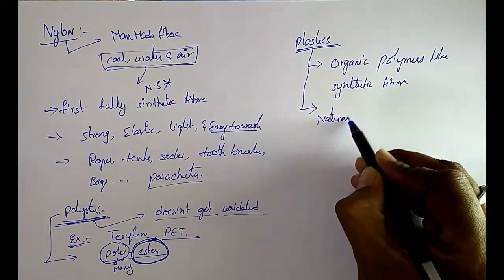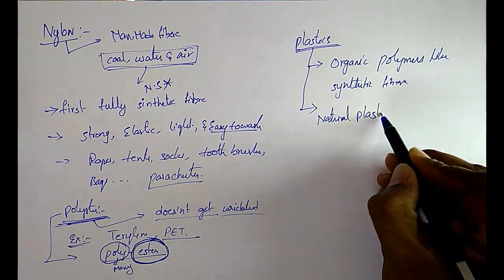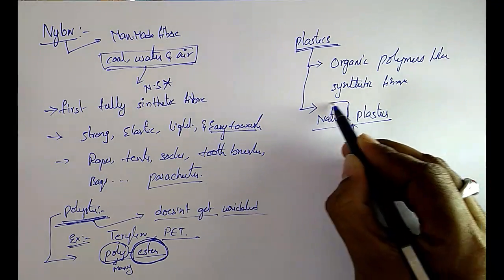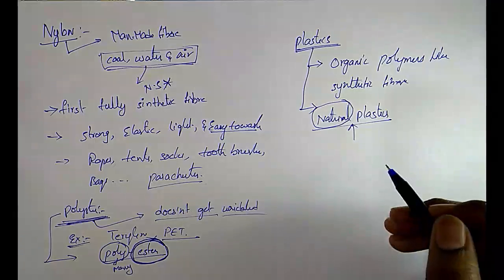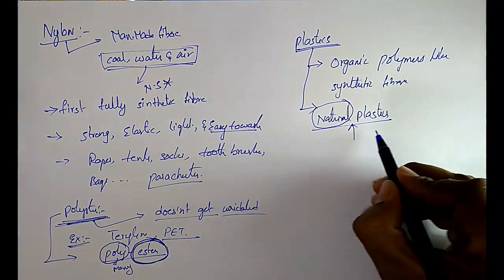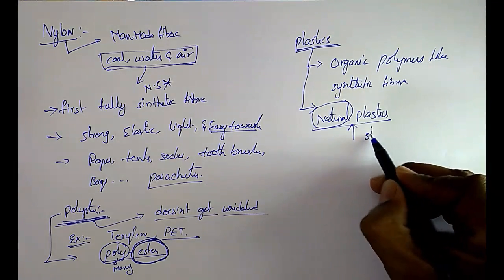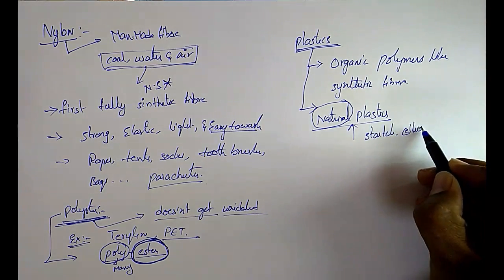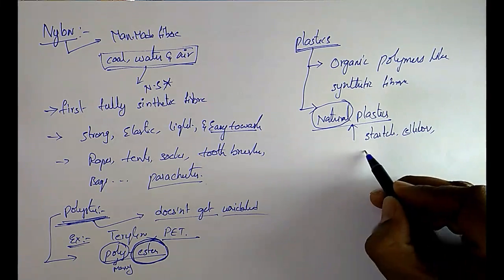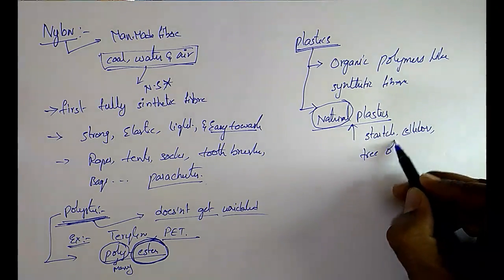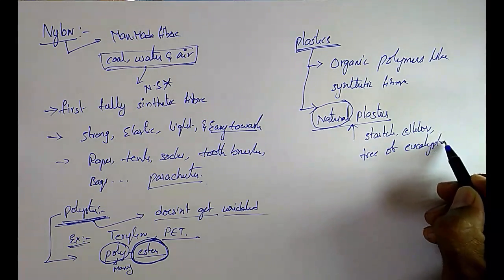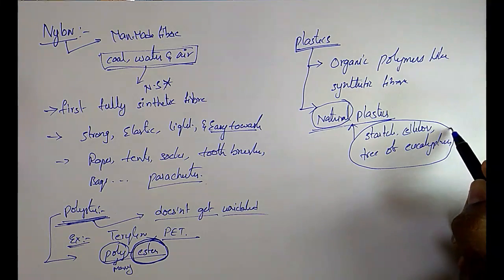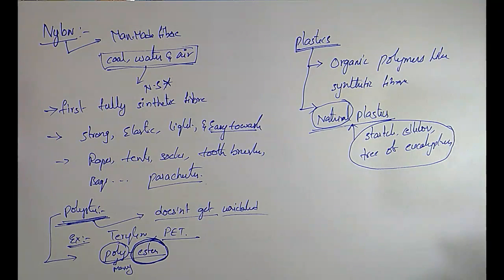First, natural plastics — as the name itself suggests, these are made from plant materials or natural materials. For example: starch, cellulose, and the tree of eucalyptus.